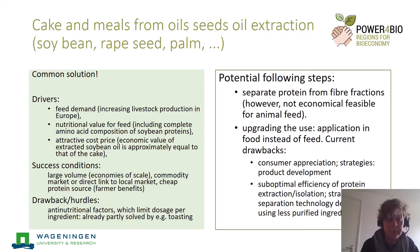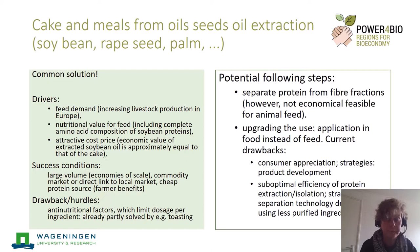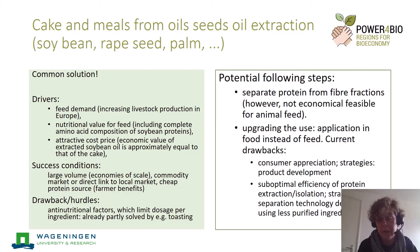The success conditions are that a very large volume is available — the economy of scale for these types of processes is really good; you can even ship it across the ocean. It's a commodity market with a direct link to the local market, and it's a cheap protein source, which is nice for farmers. There are still some hurdles: for instance, in some cakes like rapeseed there are anti-nutritional factors that limit the dosage you can add to your feed, though a lot of research is addressing that and for many press cakes it's already solved.